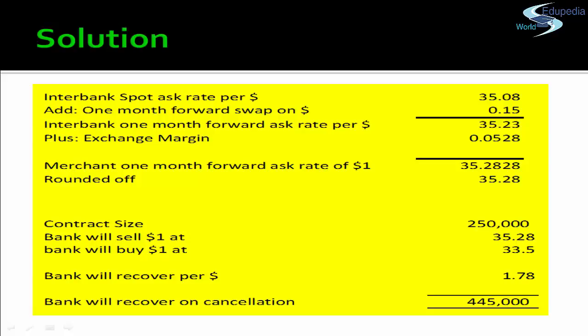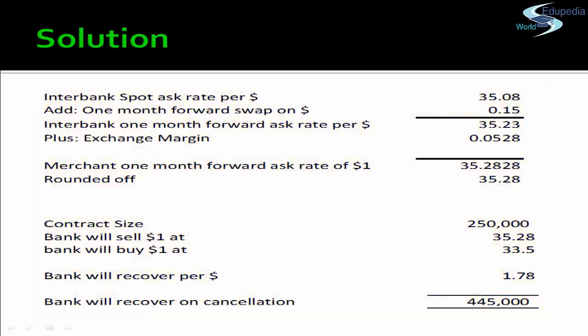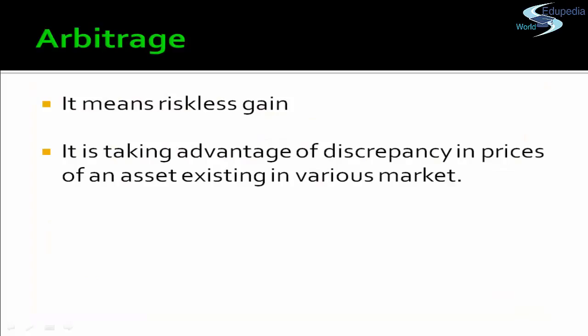The exchange margin of 0.15% of ₹35.23 equals ₹0.0528. So the merchant one-month forward ask rate is ₹35.2828. The merchant rate is always expressed to four decimals, and the bank rate to two decimals, so this rounds to ₹35.28. The contract size is 2,50,000. The bank will sell at ₹35.28 and had bought at ₹33.50, giving a loss of ₹1.78 per dollar. The bank will recover from the customer: ₹1.78 × 2,50,000 = ₹4,45,000.